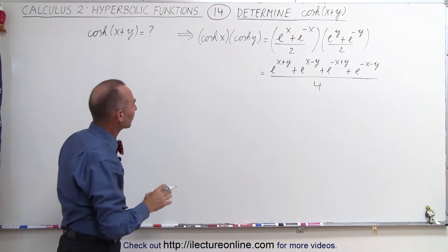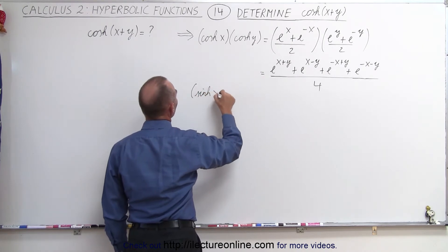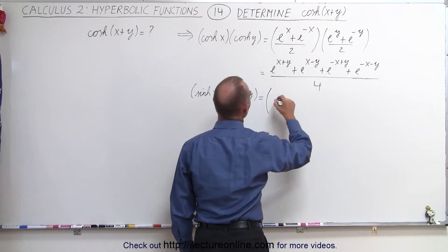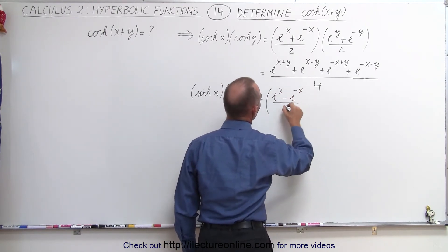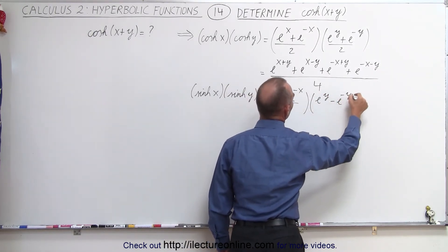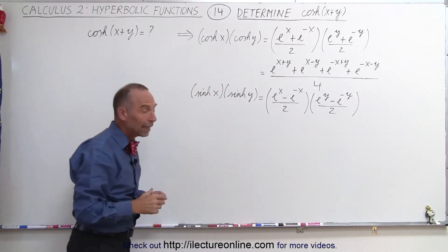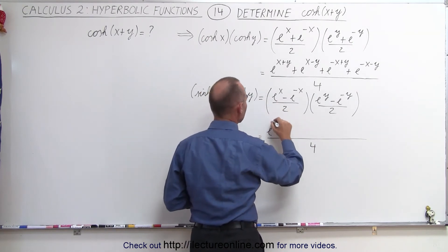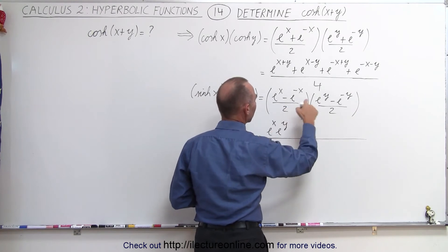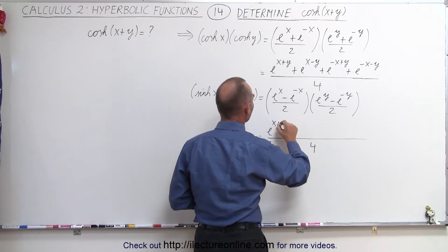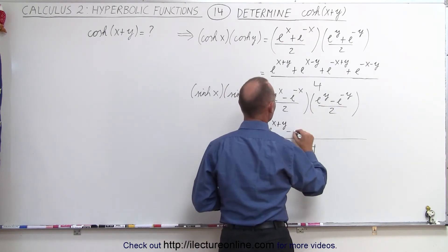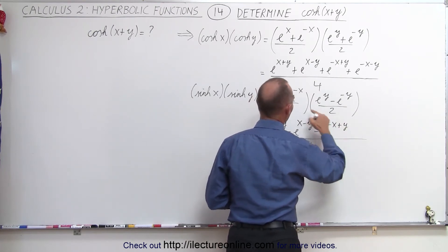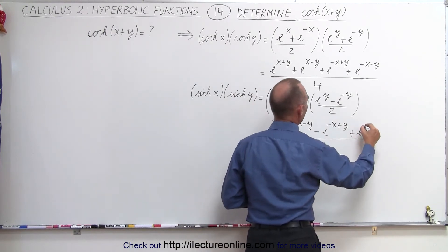Now let's do the same for the hyperbolic sine. Here we have the hyperbolic sine of x times the hyperbolic sine of y. When we multiply, we get the following: e to the x minus e to the minus x, divided by 2, times e to the y minus e to the minus y, divided by 2. Again, we get 4 terms and a 4 in the denominator. In the numerator: e to the x plus y, minus e to the x minus y, minus e to the minus x plus y, and plus e to the minus x minus y.